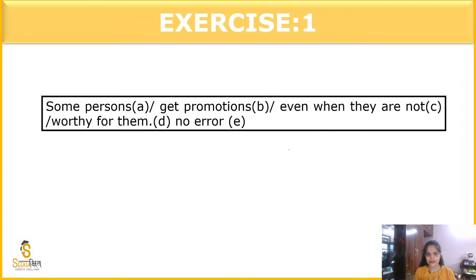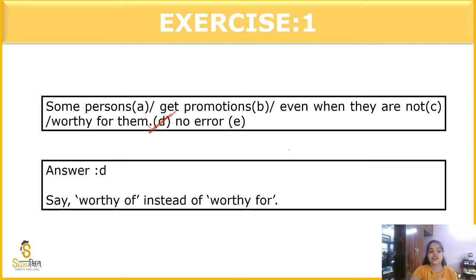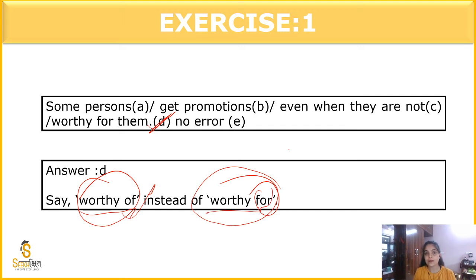The next question is, some persons get promotions even when they are not worthy for them. No errors. So, the error is in part D, because here worthy of should come, instead of worthy for. So, these are some of the phrases with which we use preposition. You have to remember these things for all these topics. They flow in a certain direction. Like, worthy of will come, worthy for will not come. This is a phrase itself actually. So, here worthy of will come.